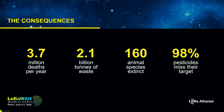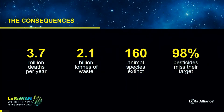More numbers — these are quite scary as well. 3.7 million people die every year from causes directly related to pollution. And every year we produce 2.1 billion tons of waste. 160 animal species went extinct over the last 10 years.